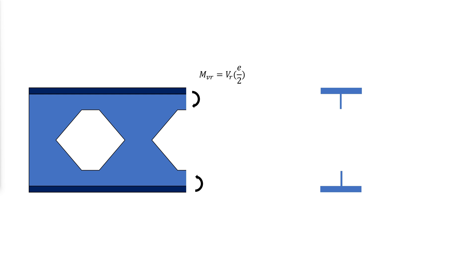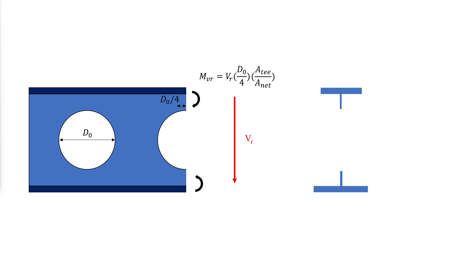The Vierendeel moment is calculated by dividing the global shear force in the beam between the top and bottom tees and multiplying that shear force by a moment arm. If the top and bottom tees are identical, the shear force can be divided equally. If the top and bottom tees are not identical, as in asymmetric sections, the shear force should be proportioned based on the areas of the tees relative to each other. For castellated sections, the moment arm is one-half the width of the top of the opening, E divided by two. For cellular beams, the moment arm should be taken as D0 divided by four, where A net is the combined area of the top and bottom tees.